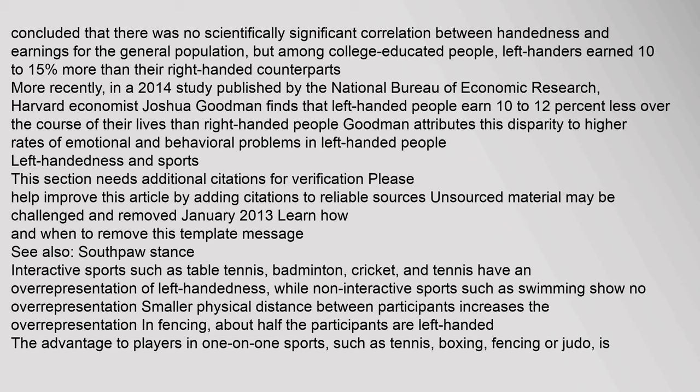Left-handedness and sports: Interactive sports such as table tennis, badminton, cricket, and tennis have an overrepresentation of left-handedness, while non-interactive sports such as swimming show no overrepresentation. Smaller physical distance between participants increases the overrepresentation — in fencing, about half the participants are left-handed. The advantage to players in one-on-one sports such as tennis, boxing, fencing, or judo is that, in a population containing perhaps 10% left-handers and 90% right-handers, the left-hander plays 90% of his or her games against right-handed opponents and is well practiced at dealing with this asymmetry.